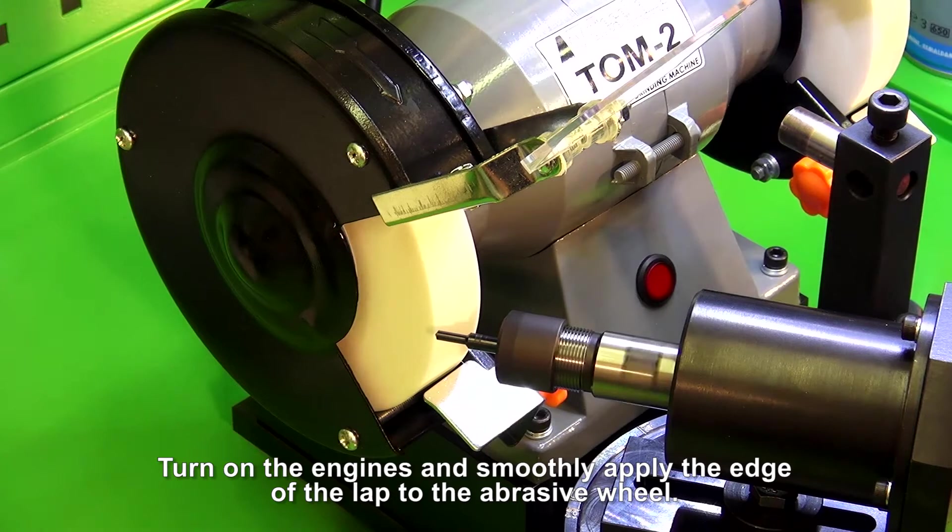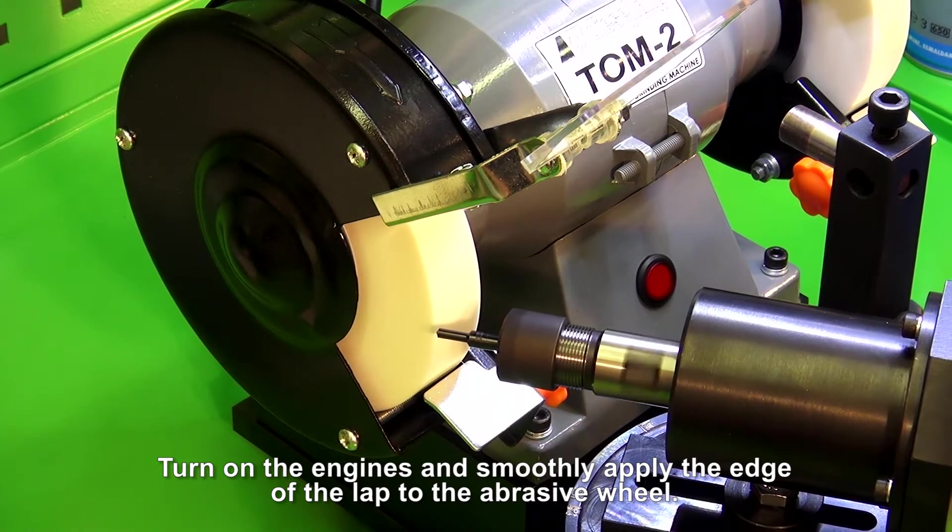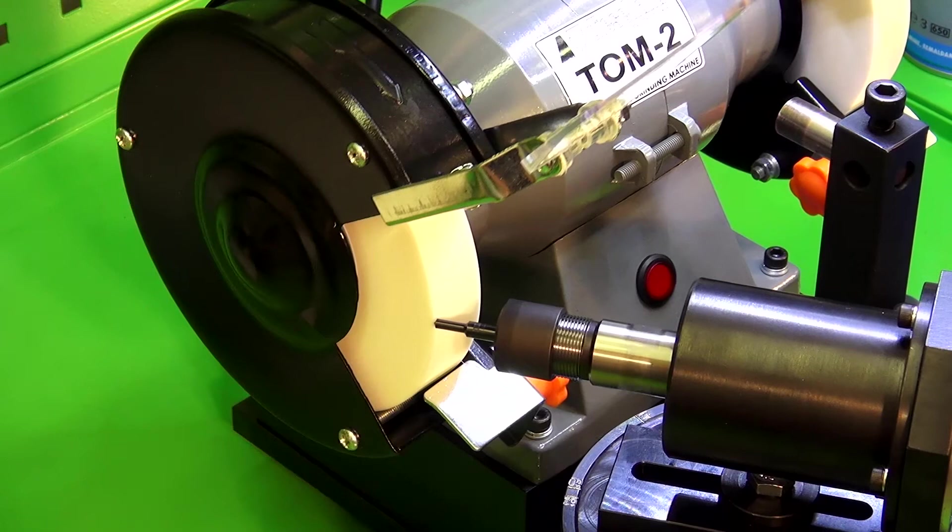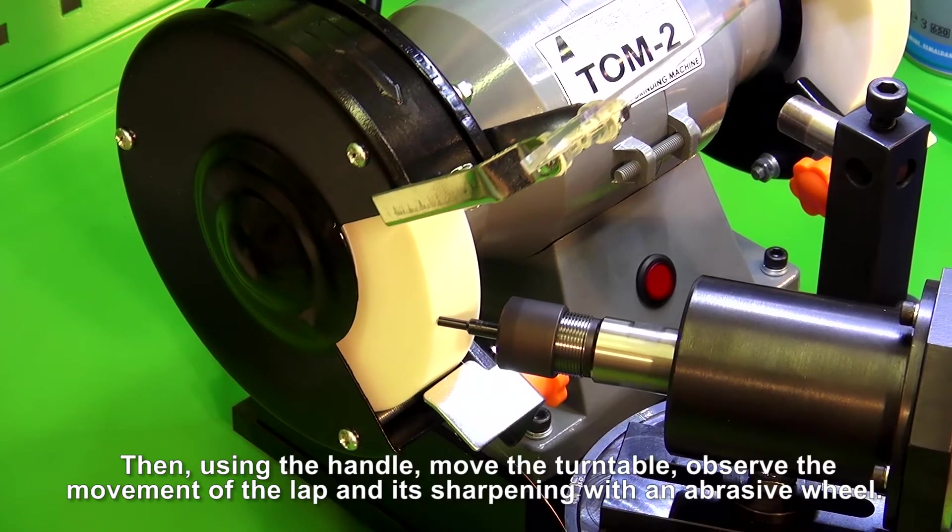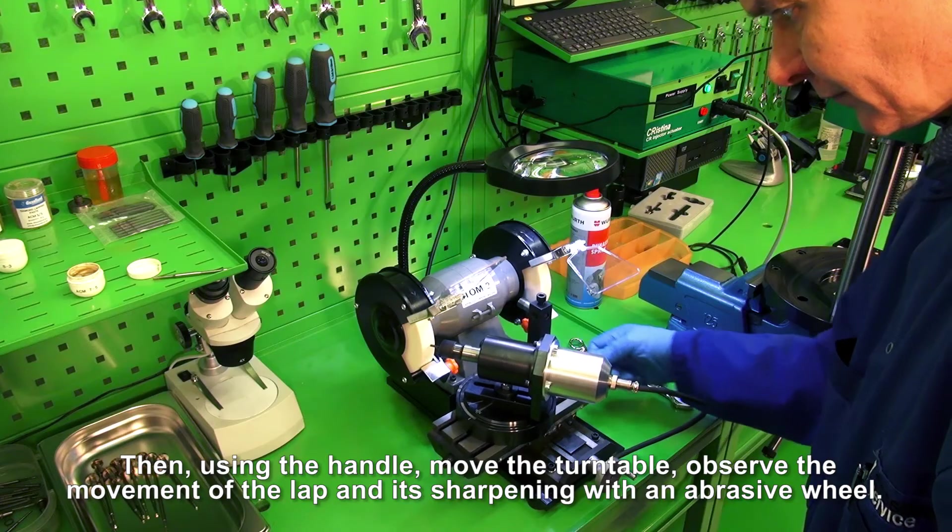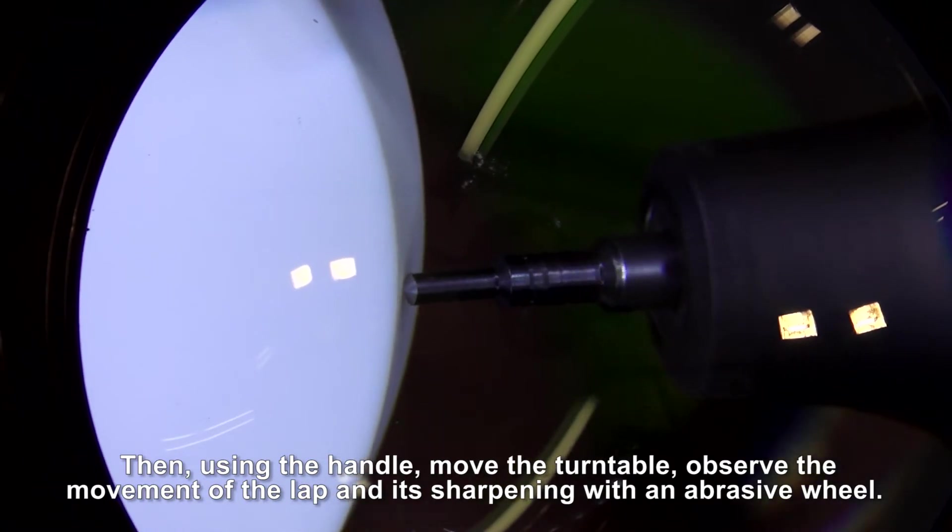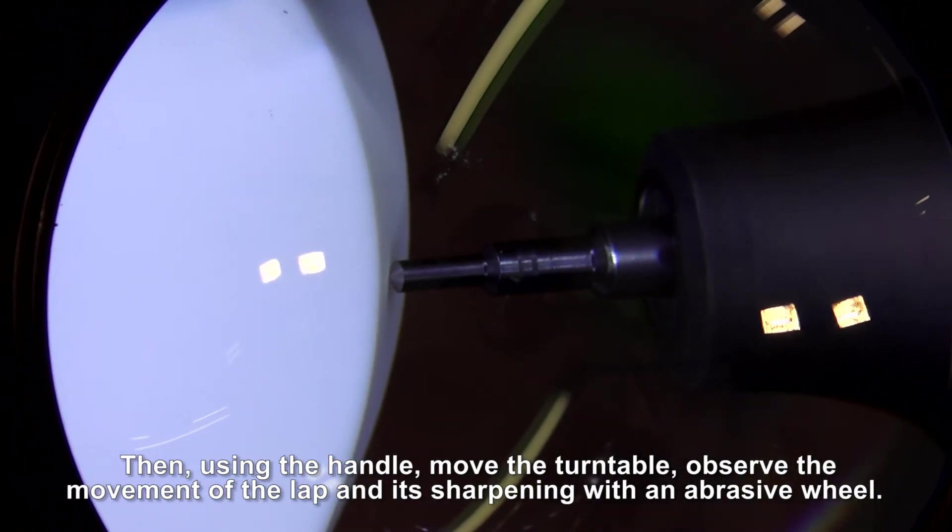Turn on the motor and smoothly apply the edge of the lap to the abrasive wheel. Then, using the handle, move the turntable and observe the movement of the lap and its sharpening with the abrasive wheel.